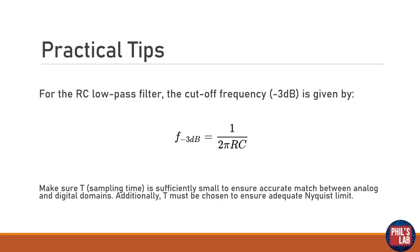Before we move over to actually implementing this on some proper hardware, here's some practical tips. In particular for the RC low pass filter, the cutoff frequency or the minus 3dB point is actually given by this formula over here. So if you want a cutoff frequency of 10 hertz, you can find out the RC constant by using this formula over here. Another point to note is that the sampling time needs to be sufficiently small to ensure an accurate match between the analog prototype filter and the digital emulation or simulation of that filter. We also need to choose T, so the sampling time, to ensure an adequate Nyquist limit.